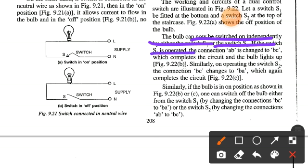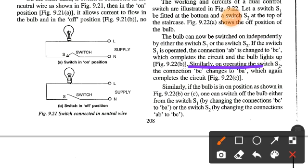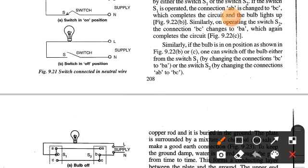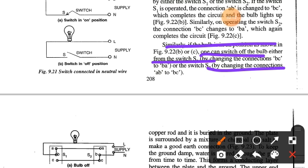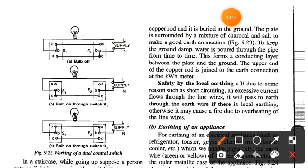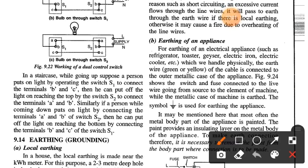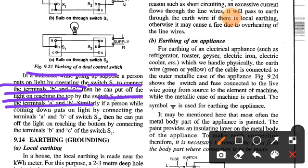The bulb can be switched on independently by either switch S1 or S2. If switch S1 is operated, connection A-B is changed to B-C, which completes the circuit and the bulb lights. Similarly, operating switch S2 changes connection B-C to B-A, which again completes the circuit. If the bulb is in the on position, one can switch it off from S1 by changing B-C to B-A, or from S2 by changing the connection accordingly. In a staircase, a person going up can turn on the light using S1 and turn it off at the top using S2, and vice versa when coming down.